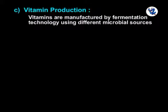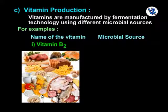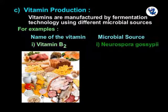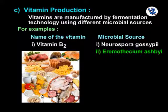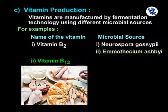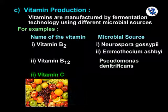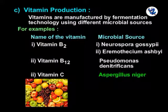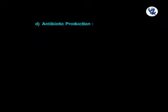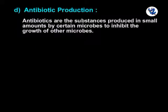Vitamin production: vitamins are manufactured by fermentation technology using different microbial sources. For example, vitamin B2 is obtained from Neurospora gossypii; pantothenic acid is obtained from Pseudomonas denitrificans; and vitamin C is obtained from Aspergillus niger.